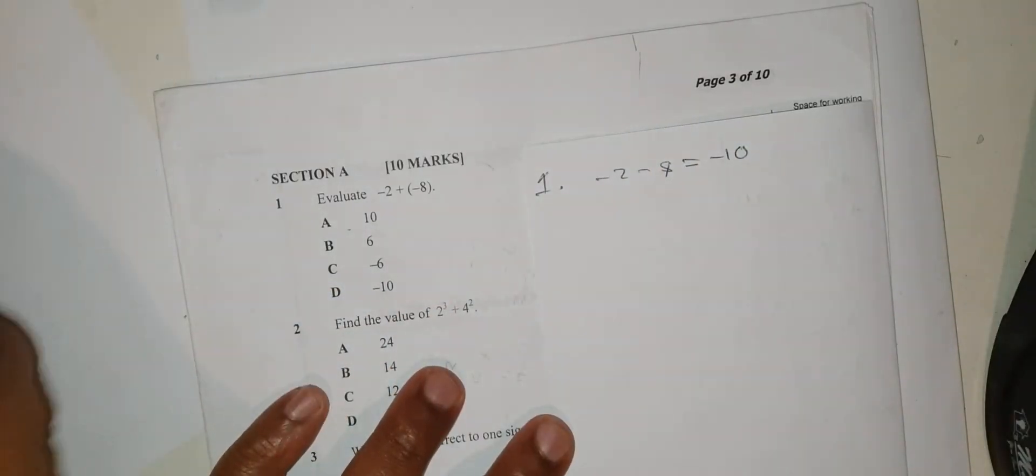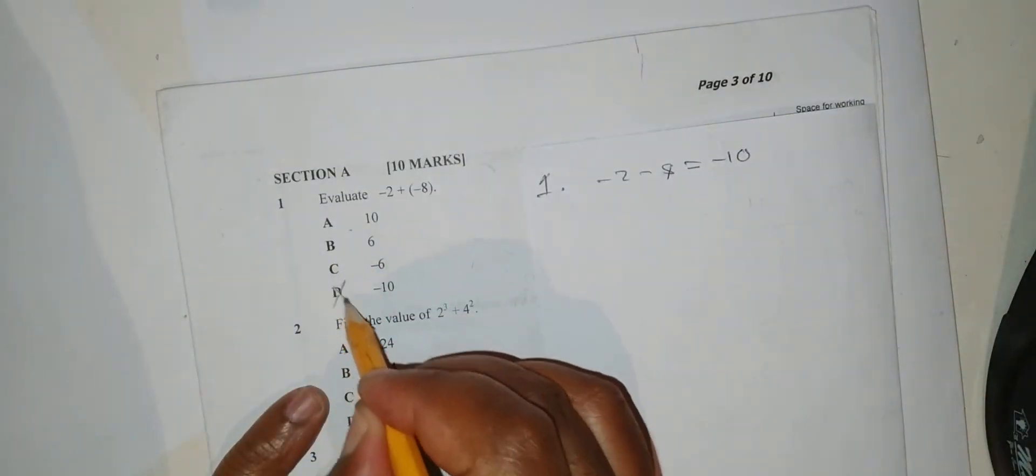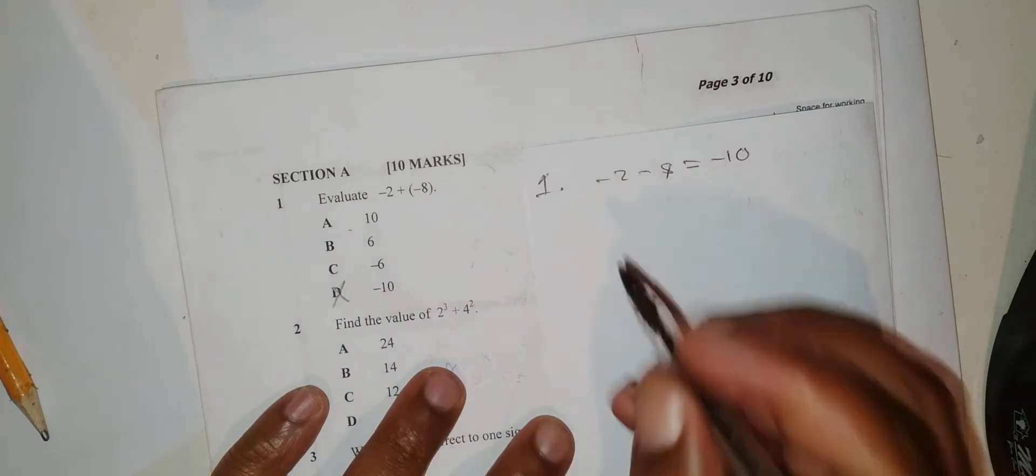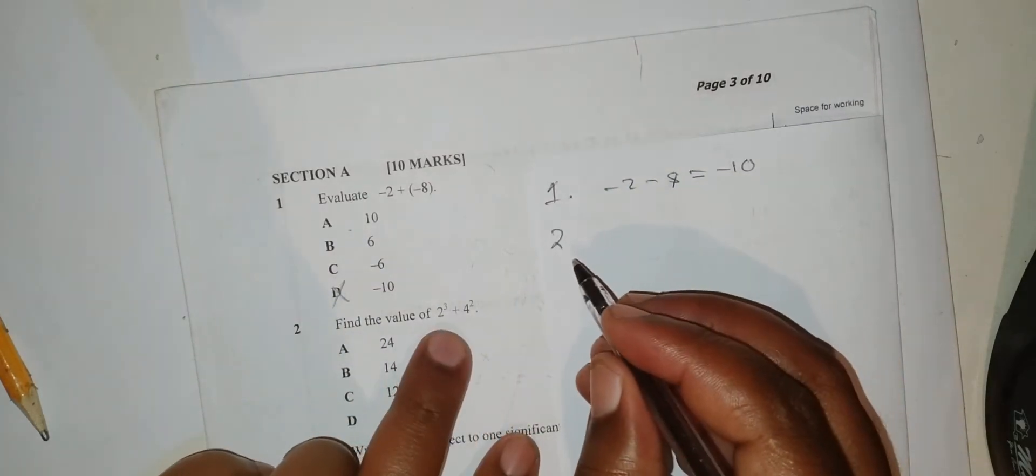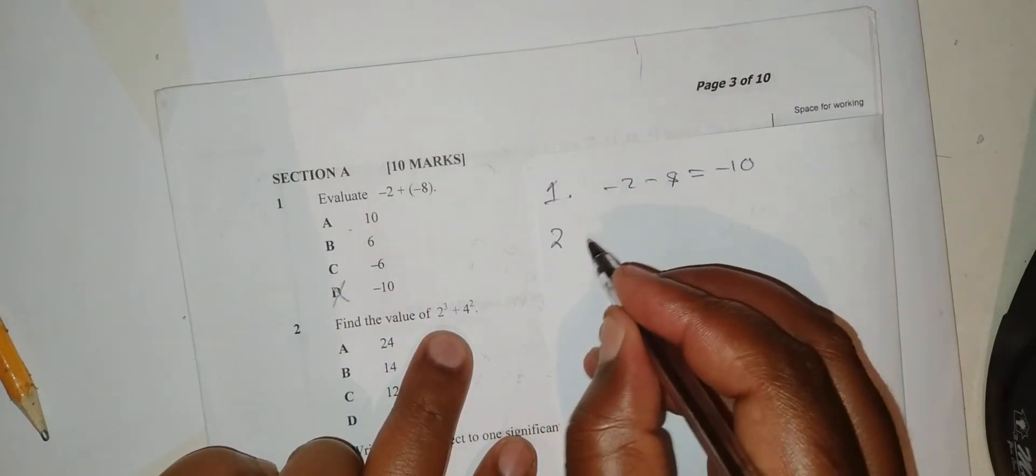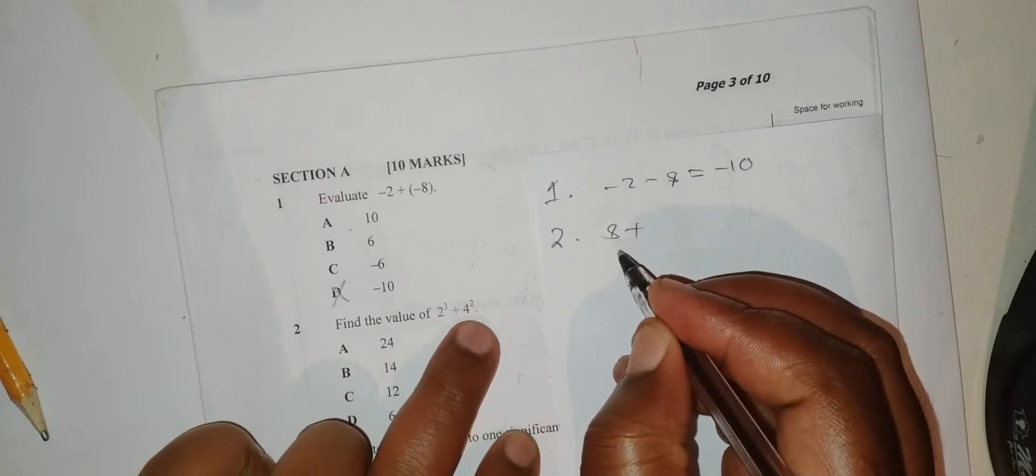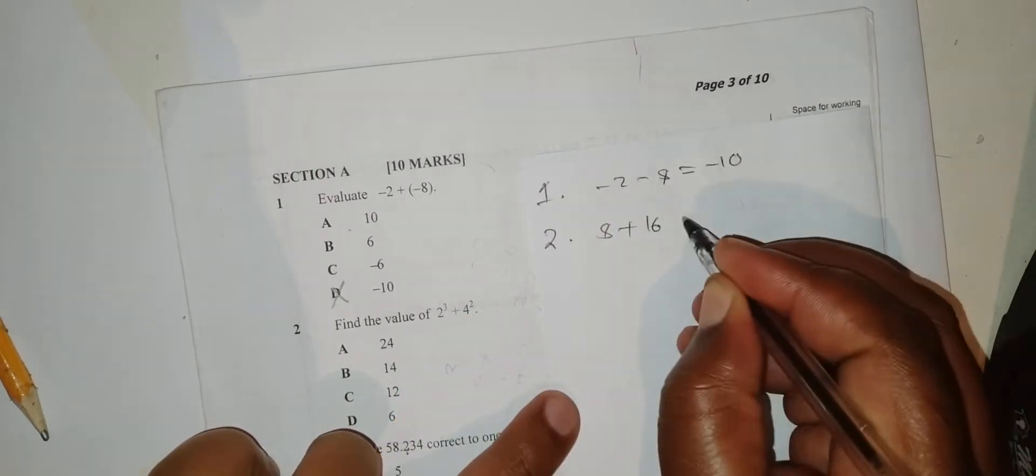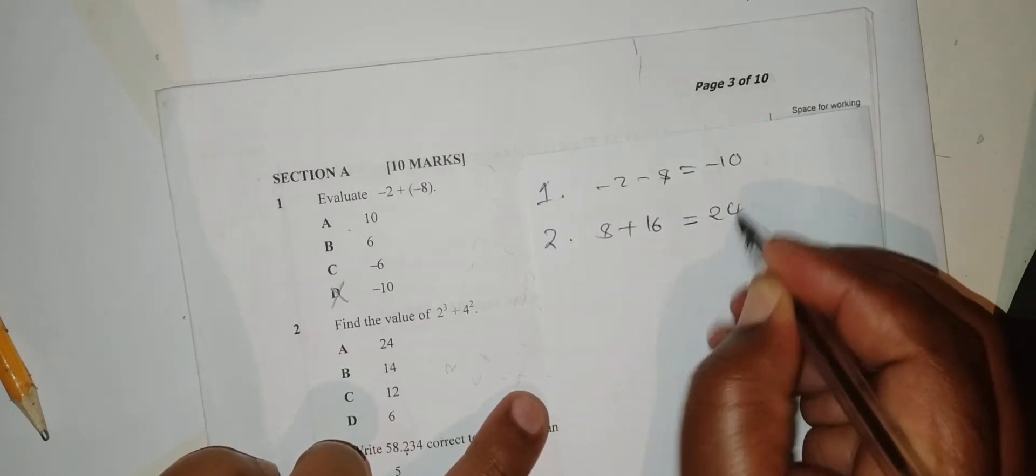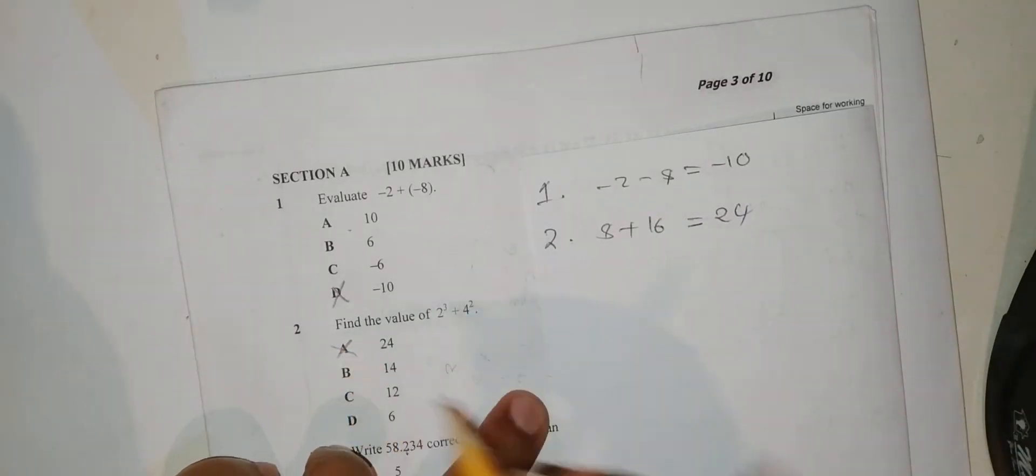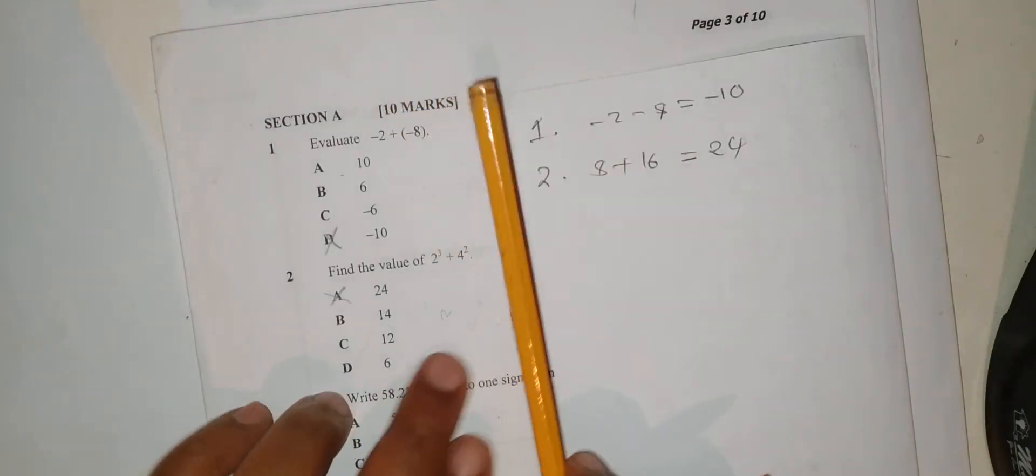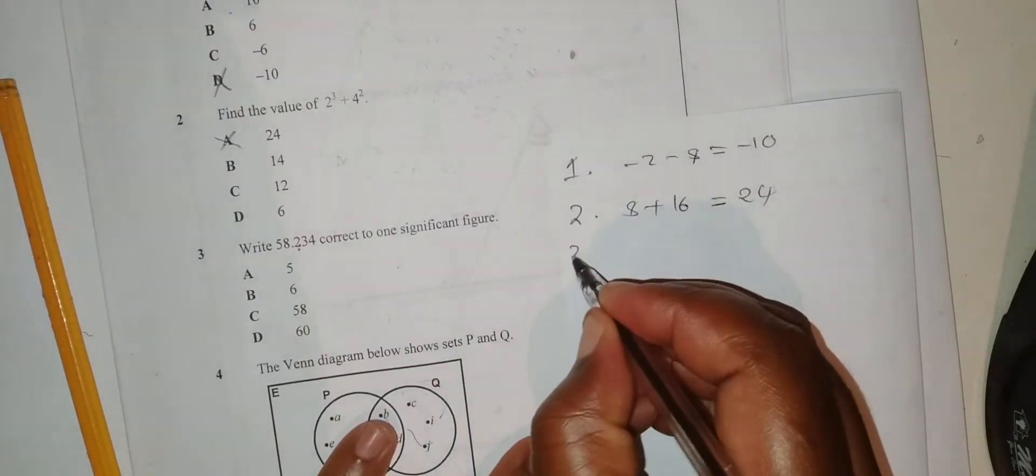Number 2: Find the value of 2 to the power 3 plus 4 to the power 2. 2 to the power 3 is 8 plus 4 to the power 2 is 16. The answer here when you add it is 24, which is A.